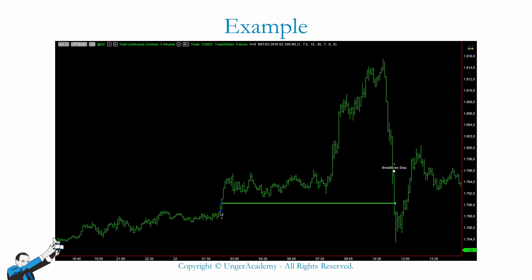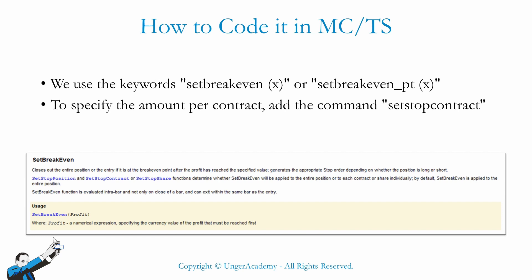Let's go and see how to code Breakeven Stops in MultiCharts and TradeStation. There are two keywords you can use - basically they do the same thing but let you express the concept in different ways. The first keyword is SetBreakeven, where the amount must be expressed as a monetary amount. The other keyword is SetBreakeven_PT, where the amount between brackets is expressed in ticks or points. The meaning is exactly the same, since each monetary amount corresponds to a certain number of points or ticks, so there are no differences in terms of effectiveness, only in terms of form.